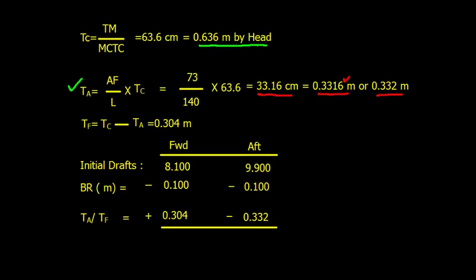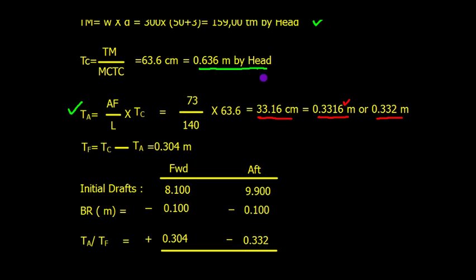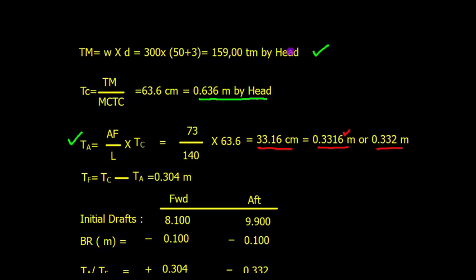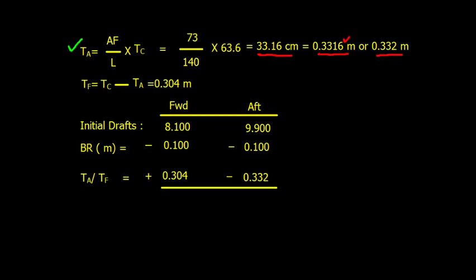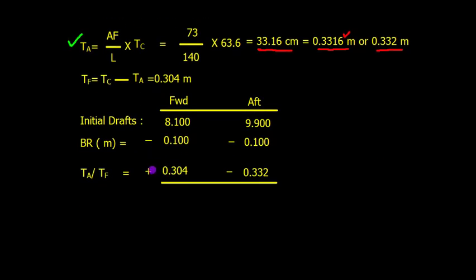The trimming moment was by head, so the forward draft will increase (plus sign) and the aft draft will reduce (minus sign). The final drafts are 8.304 meters forward and 9.468 meters aft. It's always useful to use three decimal places for verification.